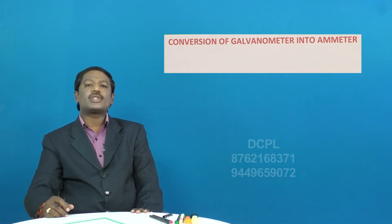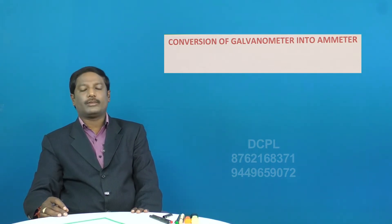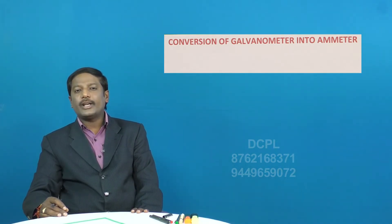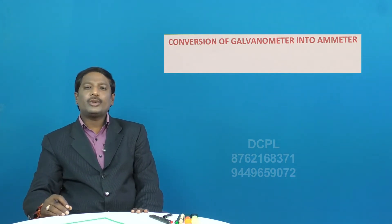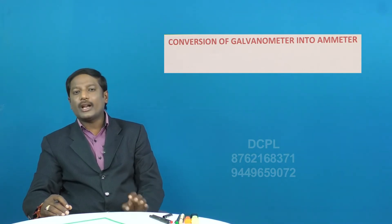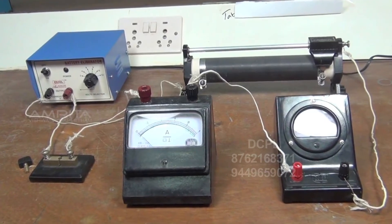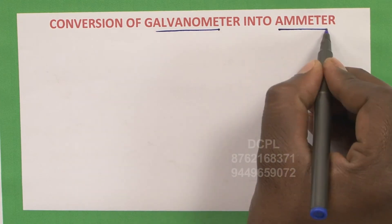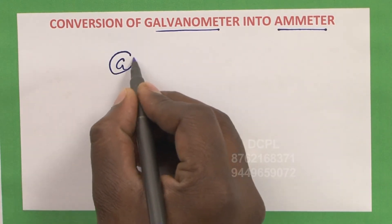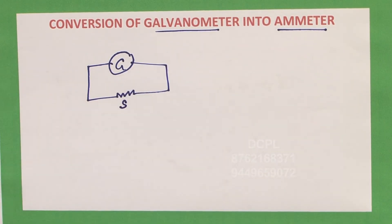Let us take up the next concept: the conversion of galvanometer into ammeter and voltmeter. In a moving coil galvanometer, the current measured is very small, of the order of nano amperes. To convert a galvanometer into an ammeter, you have to connect a very small resistance called the shunt resistance in parallel with the galvanometer.